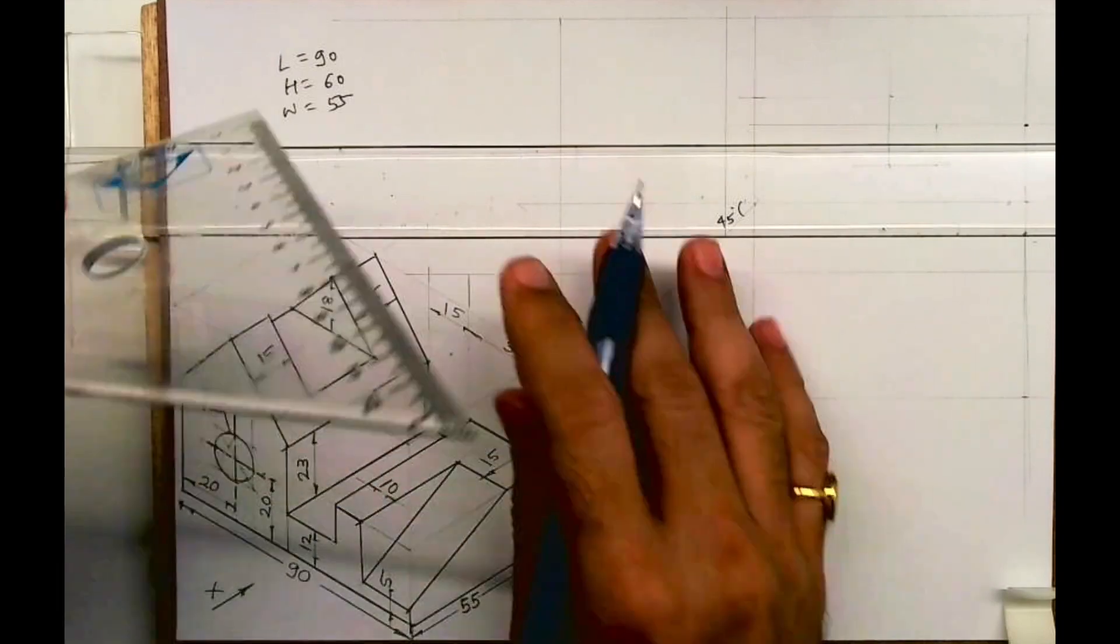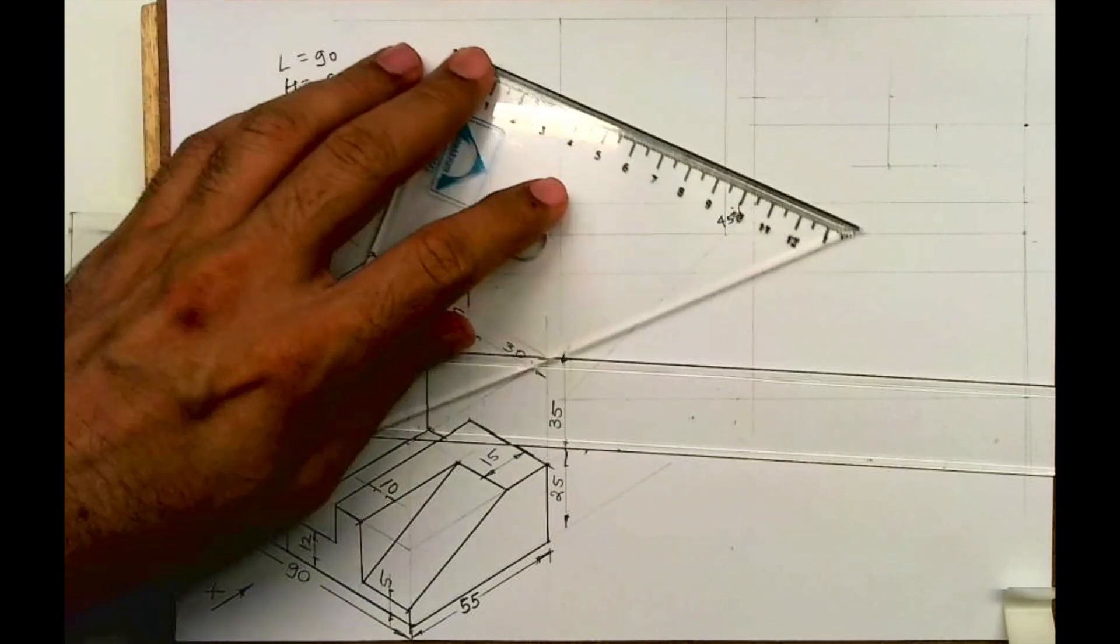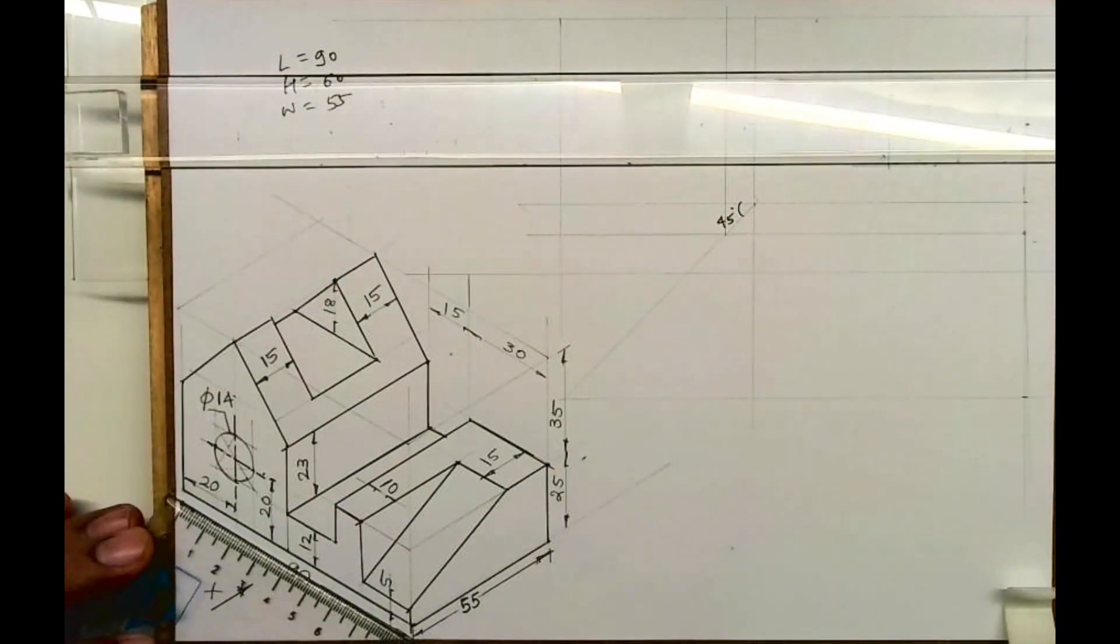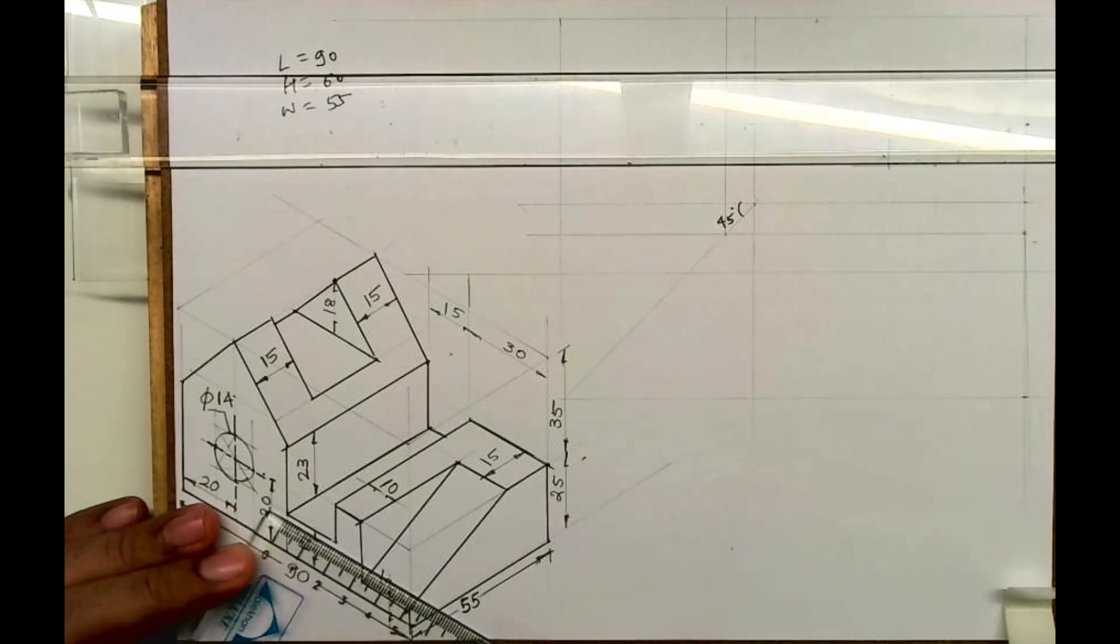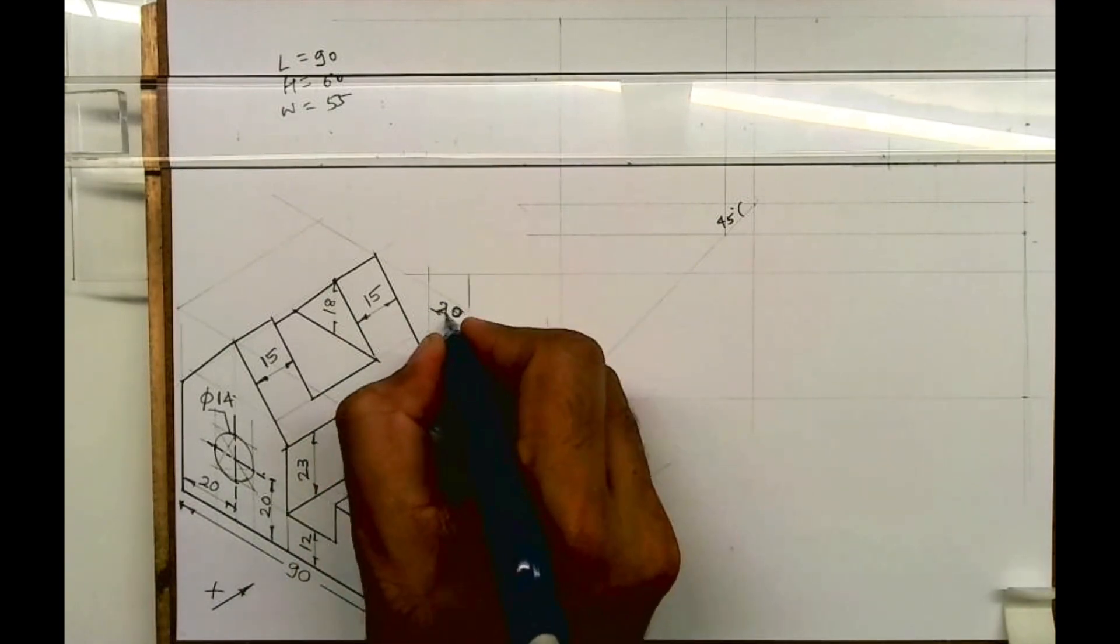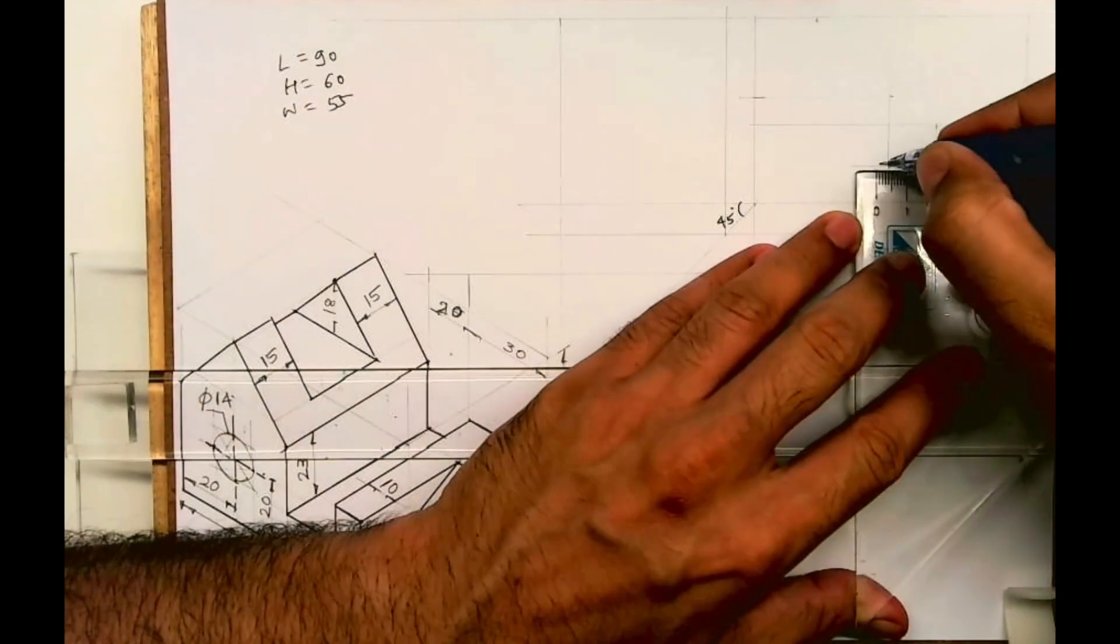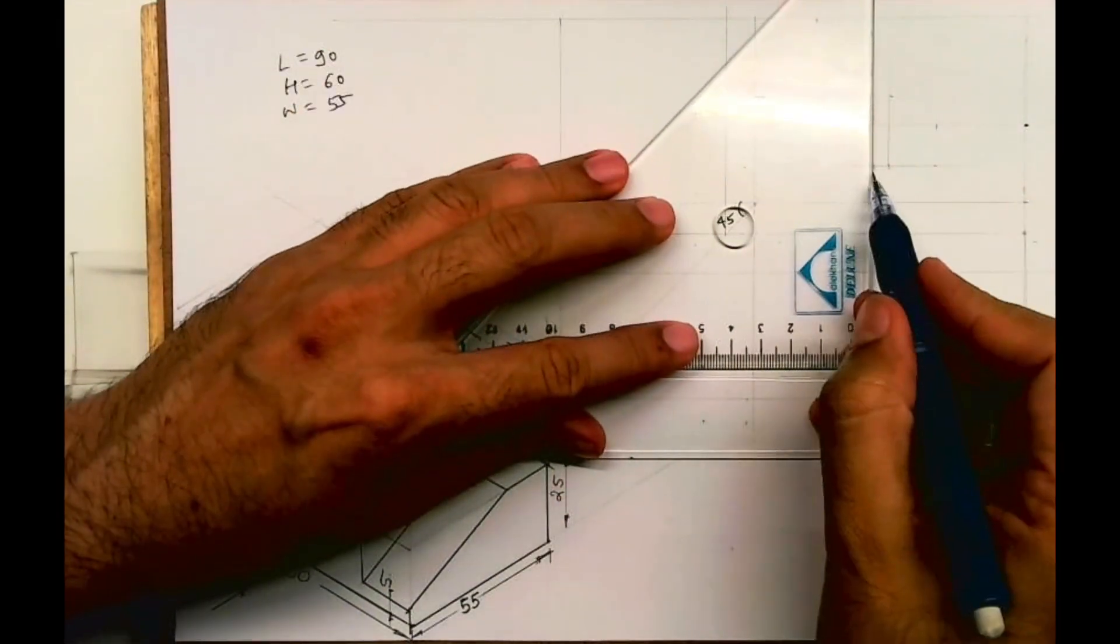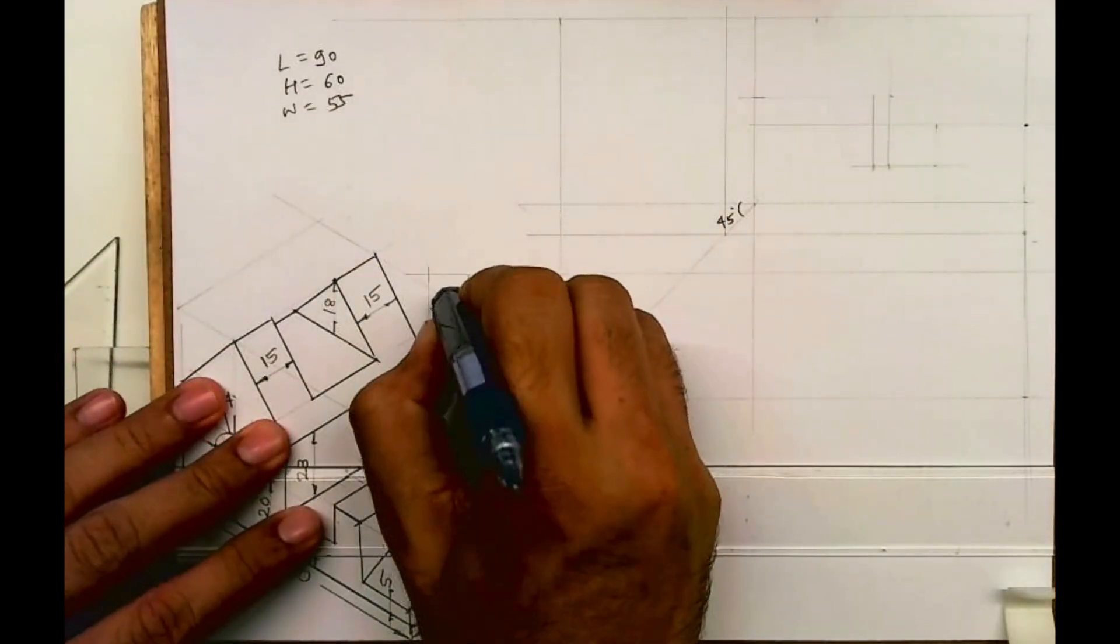Now this distance is 40. Okay, when I'm checking over here it is 45, so that 15 is wrong. It's actually 20. So you take 20 and go up by 23.